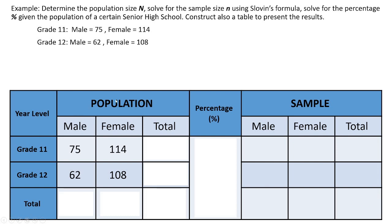We will have a column for the population and the sample, with percentage in the middle. The first column is the year level — we have Grade 11 and Grade 12. In the population part, I will be dividing it into three columns: male, female, and total. For the sample, we also have three columns: male, female, and total. And we have a row for Grade 11, a row for Grade 12, and a row for the total.